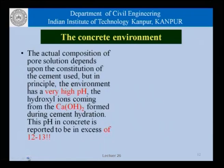Let us look more closely at the concrete environment around the reinforcing bar. The actual composition of the pore solution depends on the constitution of the cement used, but in principle the environment has a very high pH — the hydroxyl ions coming from the calcium hydroxide formed during cement hydration. The pH in concrete is reported to be in excess of 12 or 13. Whether it is the hydration of C3S, C2S, C3A, or C4AF, any phase of cement when it hydrates leads to formation of hydration products and a lot of calcium hydroxide. This calcium hydroxide dissociates into calcium and hydroxyl ions, causing the pH to be in excess of 12 or 13. So in principle, the reinforcing bars are in an environment which is extremely basic.